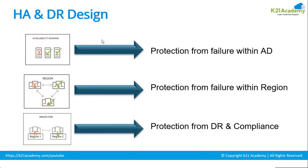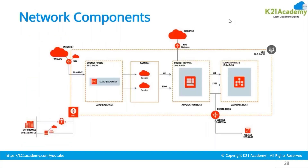When designing your HA and DR, if you want data center protection, you need to select a region that has got multiple availability domains, or you can deploy it across regions. This gives you protection against a region failure — if one region fails, your other two regions have the data replicated, and that is going to save you from failure. So that is what you need to consider in your HA and DR design.